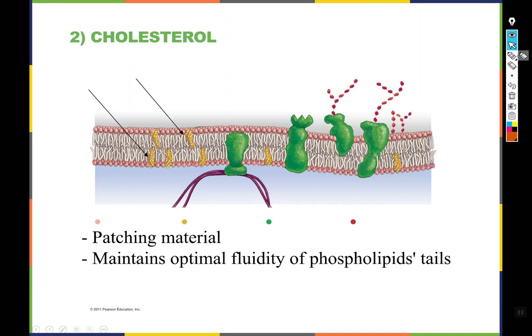Cholesterol serves as a patching material. If the cell has a place where the membrane has lost some phospholipids, it can fill that in either temporarily or permanently with cholesterol. It also helps to maintain optimal fluidity of the phospholipid tails — keeping the membrane in a nice, oil-like fluid state so that things can move around within the membrane.